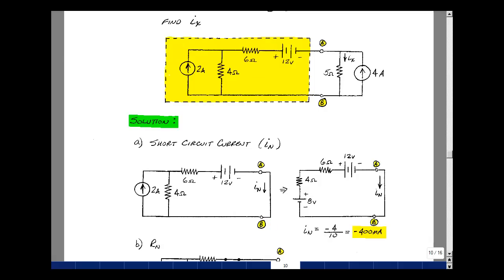There are a lot of ways you could do this. Let's do a source transformation so we'll have just a one-loop circuit. So 4 times 2 is 8. The plus sign is going to be where the arrow is pointing, and in series with a 4 ohm resistor. Find the current in this direction.